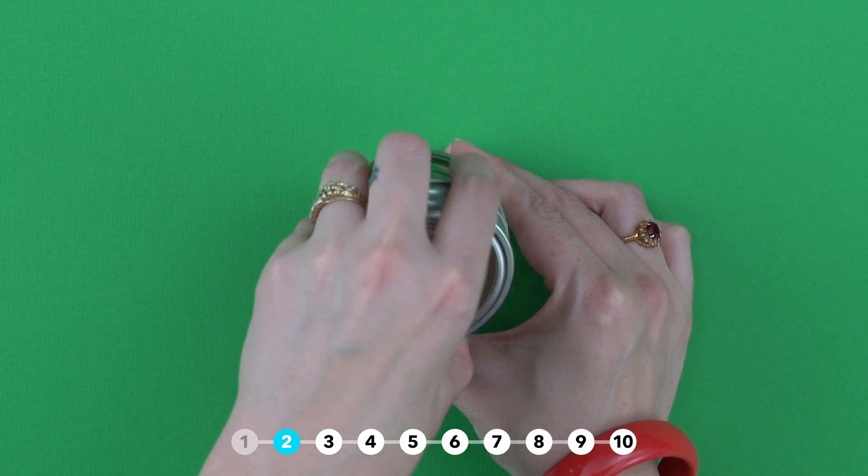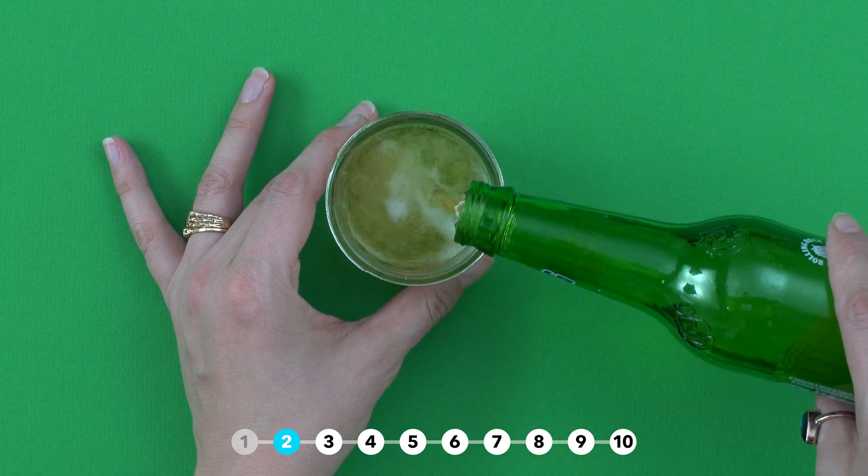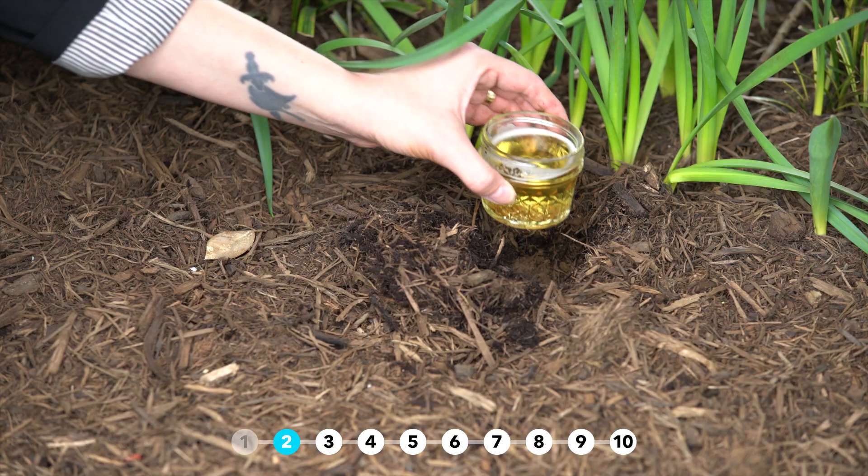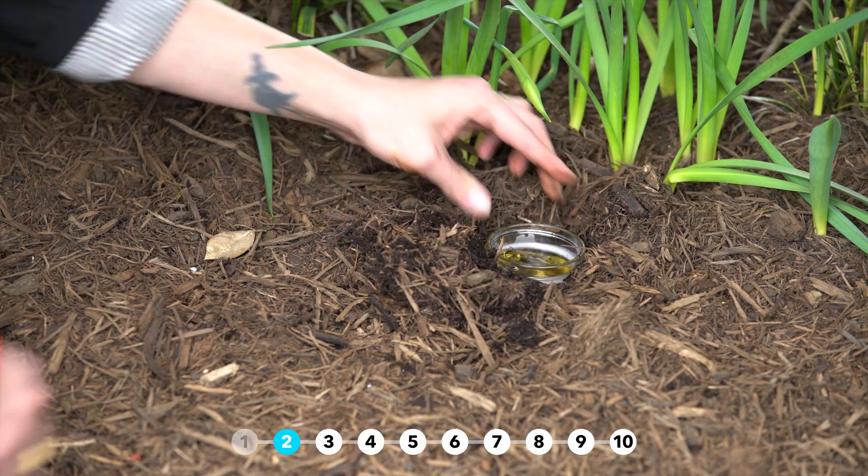Got slugs? Turns out they like beer too. Fill a jar with a little bit of beer, plant it in your garden, and they'll come to it and not be able to get out.